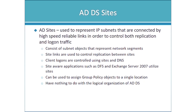Sites also control replication. Replication within the same site between domain controllers happens very quickly — on a change notification basis, often within seconds. When you have separate physical locations with low-speed or unreliable WAN links, you want the ability to control and schedule that replication, and sites and site links allow you to do that. Other site-aware applications include the Distributed File System and Exchange Server 2007 and later. You can also assign group policy objects to sites, though this is not typical.